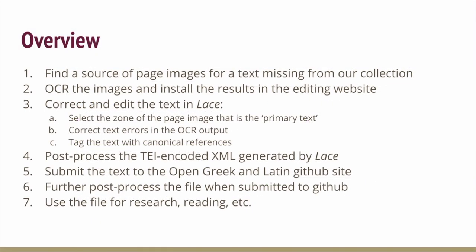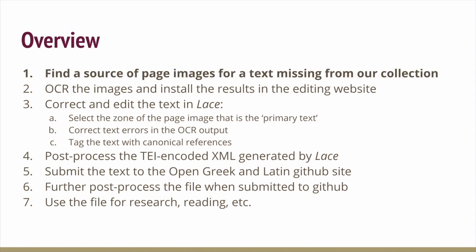In this overview, I've broken down the process into seven steps. The first of these is to find a source of page images for an ancient text that's missing from our collection — say from the First Thousand Years of Greek project, which is collecting a single edition for every text from 700 BC to 300 AD.